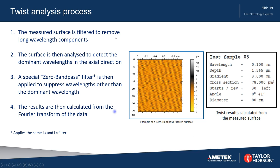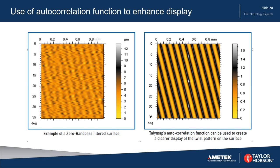A Fourier transform is then applied to allow us to calculate the parameters we've seen. Here again is the example of the zero bandpass filtered surface, but in this case we've used the autocorrelation function to enhance the display, giving a very clear visualization of the twist pattern that exists on the surface.